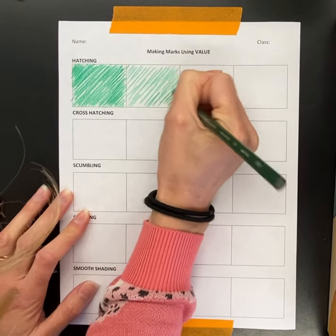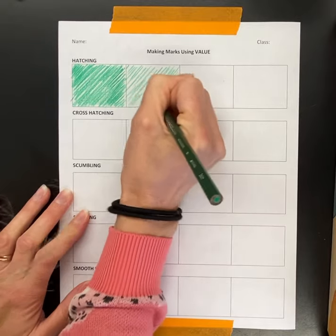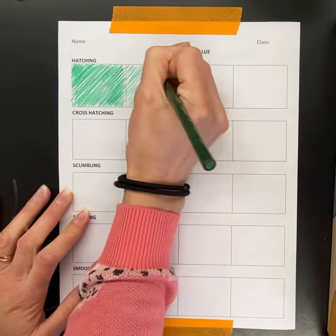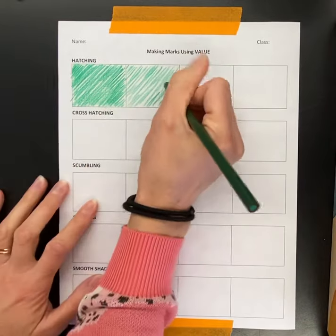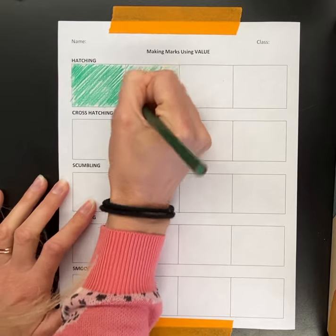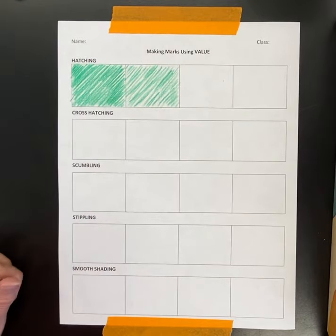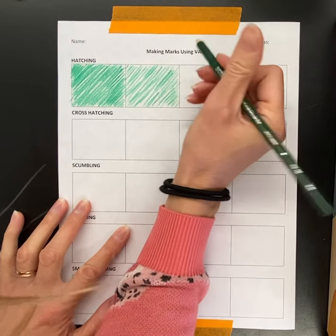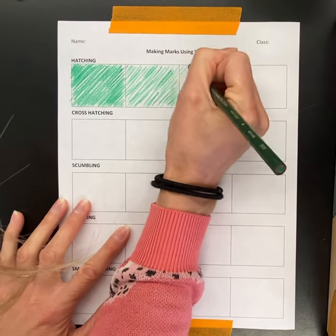Try to really neatly fill in the box. I'm not necessarily drawing the lines any lighter, it's just I'm leaving more space between them. For the next one now you want it even lighter, so I'm going to be leaving even more space.